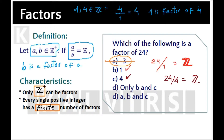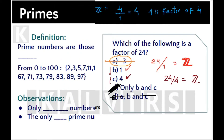Now, alternative D says only B and C. Yes, of course, it has to be that. And alternative E, A, B, and C — it cannot be, so this one is discarded. Choice D is correct.